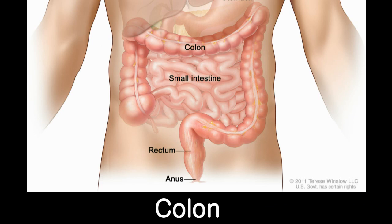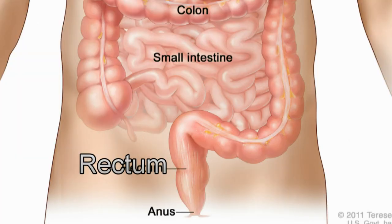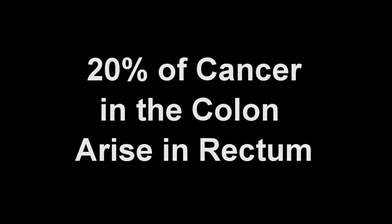The colon is a part of the digestive tract that connects the stomach and small intestine to the anus. The terminal portion of this colon is called the rectum, spanning approximately 12 centimeters in length. About 20% of all cancers that occur in the colon arise in this rectum.